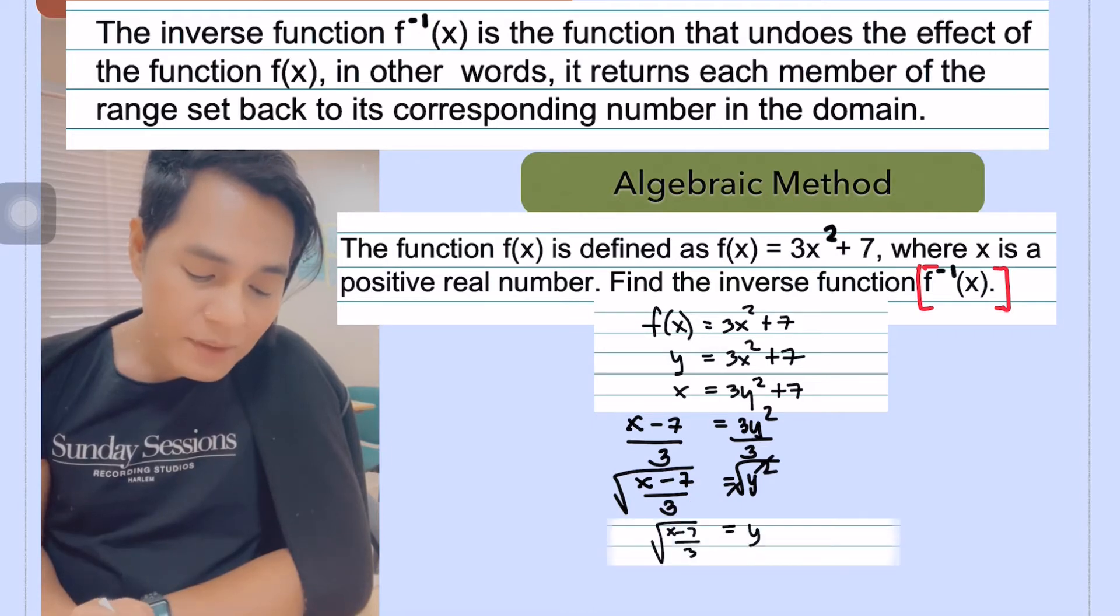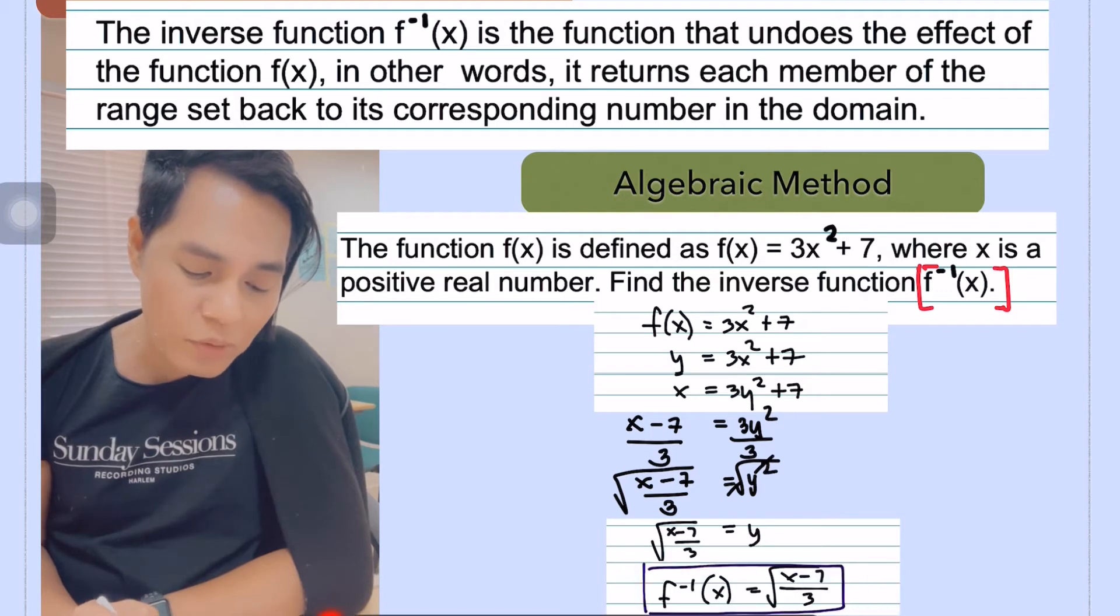And then the last part here, since the subject now is equal to y, we can change this y into f to the power of negative 1 of x is equal to the square root of x minus 7 over 3.